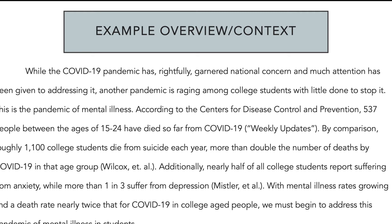With the next few statistics, they not only establish the exigency and provide some current context, but they also use these statistics to make the audience care about the issue. According to the Centers for Disease Control and Prevention, 537 people between the ages of 15 to 24 have died so far from COVID-19. By comparison, roughly 1,100 college students die from suicide each year — more than double the number of deaths by COVID-19 in that age group. Additionally, nearly half of all college students report suffering from anxiety, while more than one in three suffer from depression. With mental illness rates growing and a death rate nearly twice that for COVID-19 in college-age people, we must begin to address this pandemic of mental illness in students.